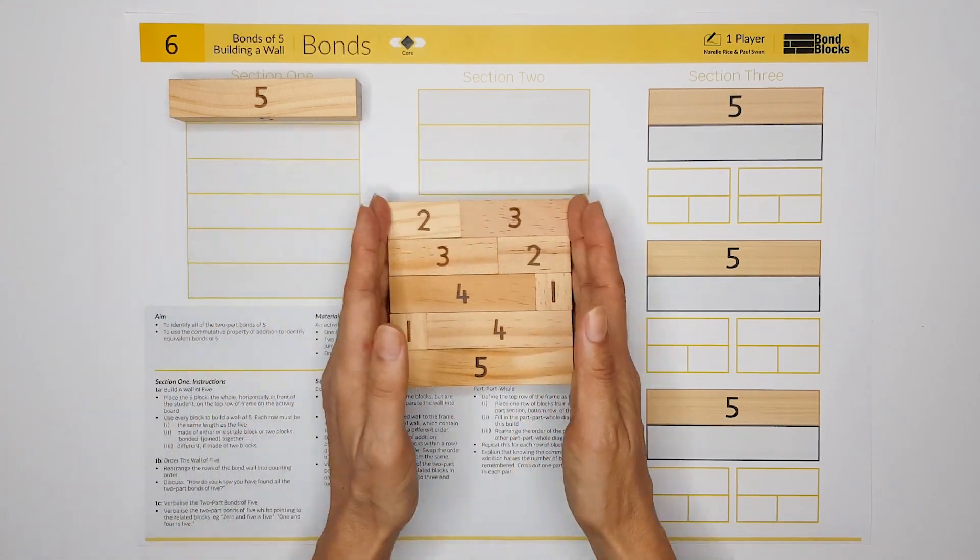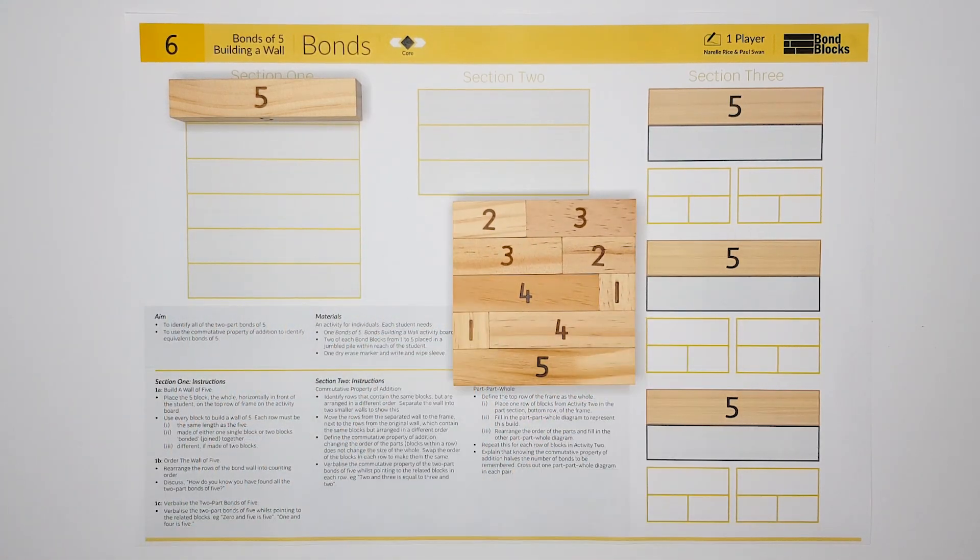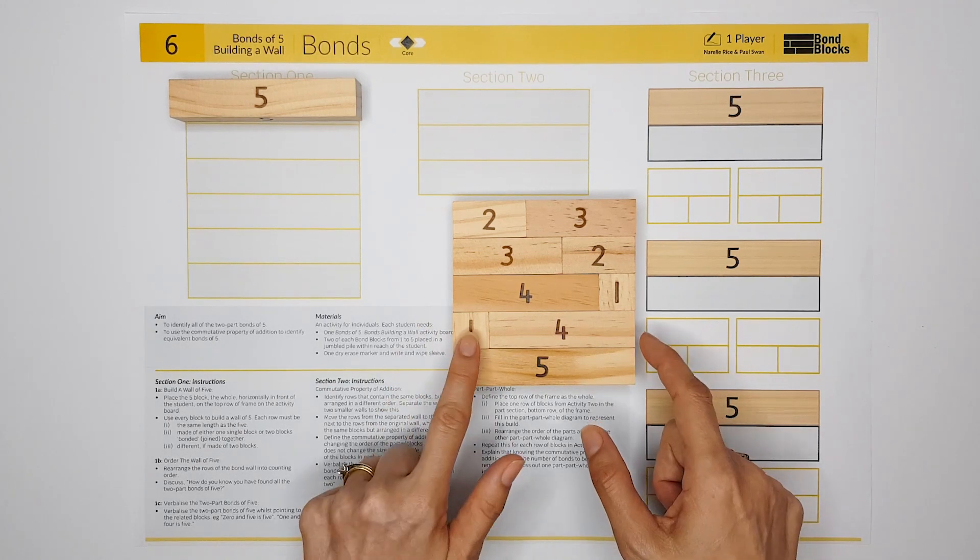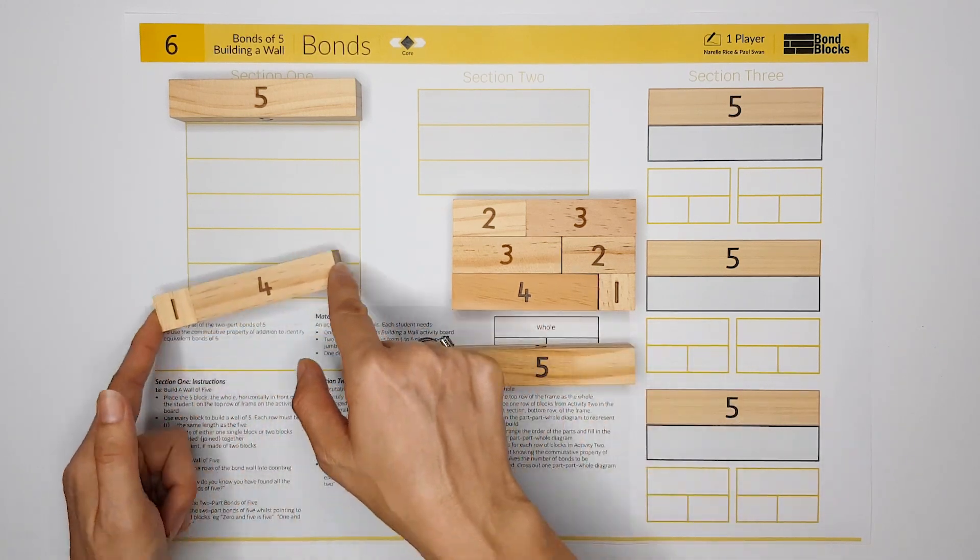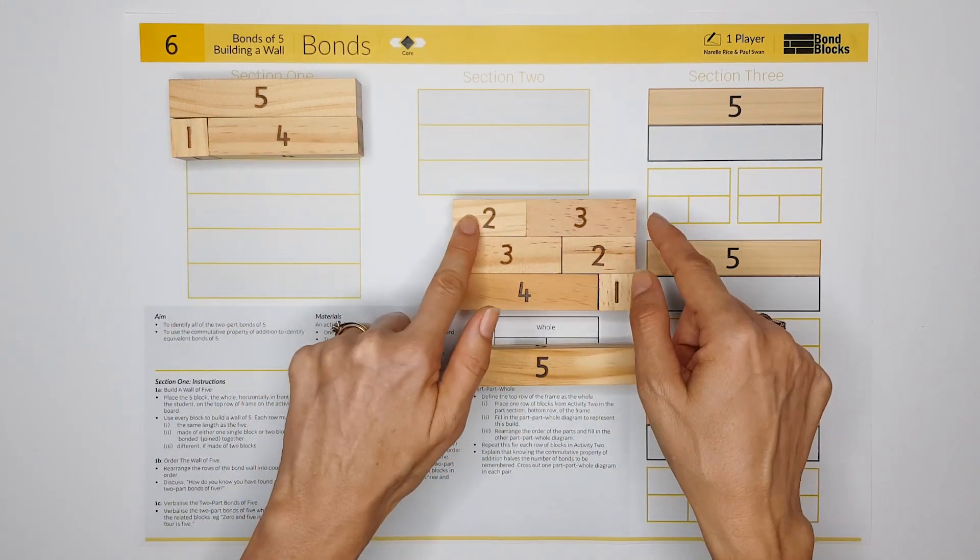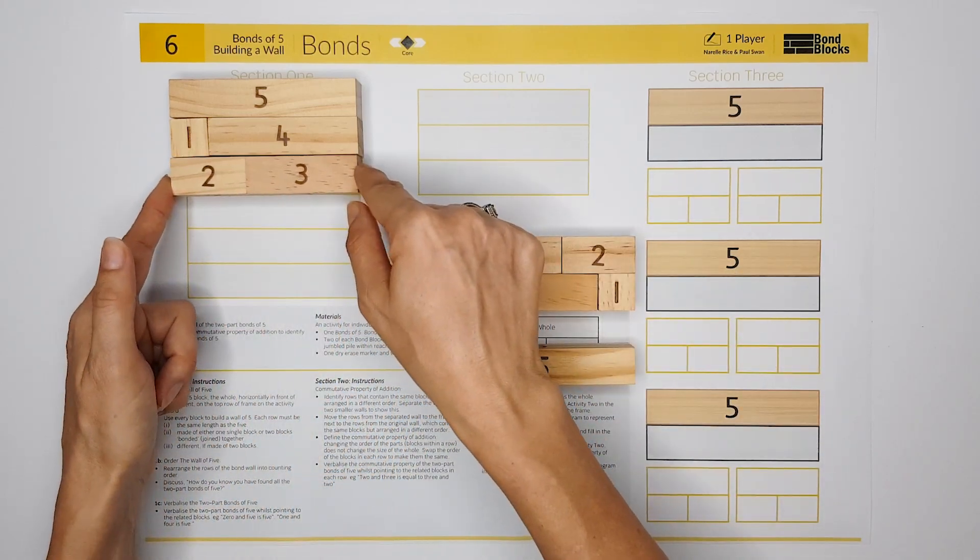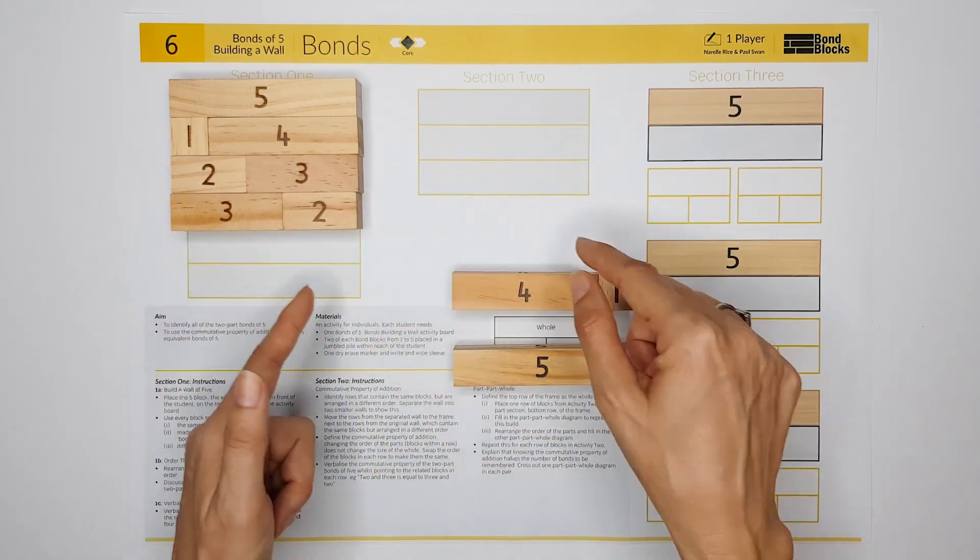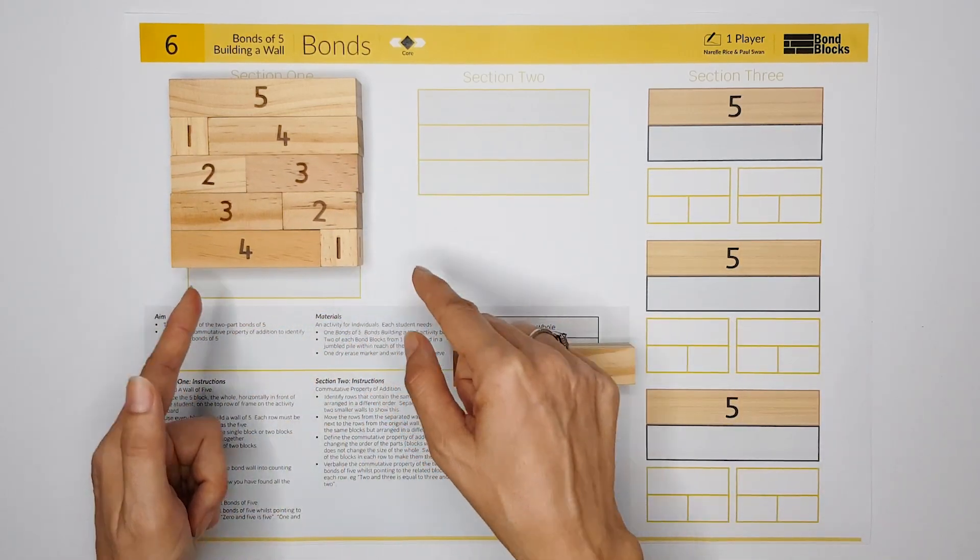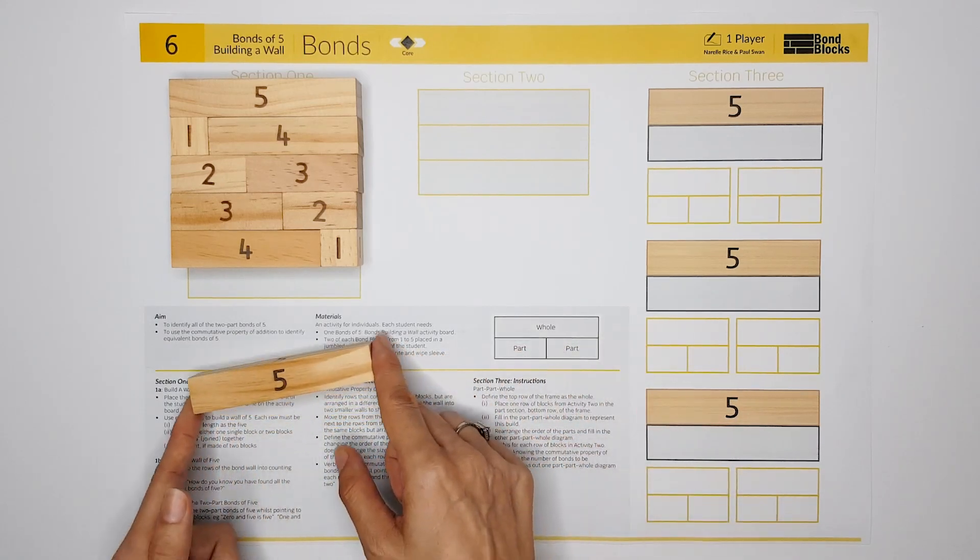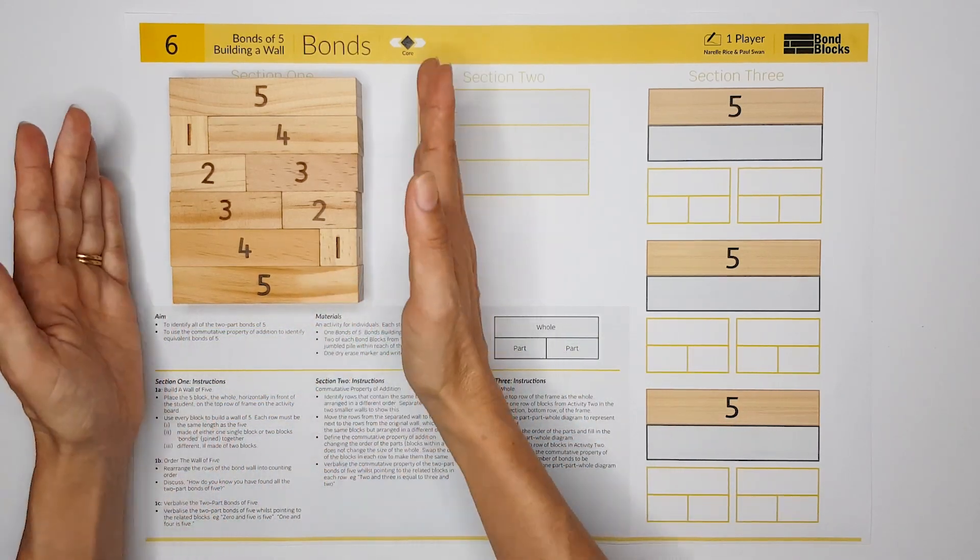We're going to slide our wall to the side. Start by putting your row that begins with the number one first, followed by the row that begins with a two, three, four, and finally you will end up with the row that is the single block of five.